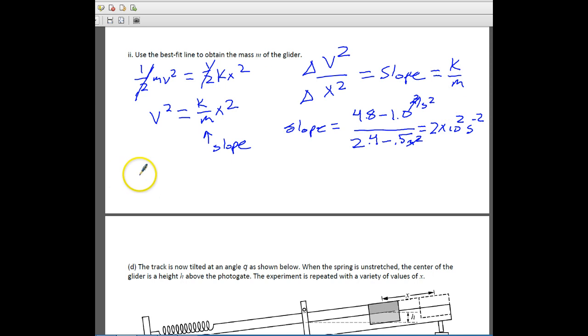So if we think about this, if slope is equal to k over m, and I rearrange this for m, m is going to be equal k over the slope. So let's just do that. Our k value is 40 newtons per meter, and our slope we just calculated is 2 times 10 to the negative second, second squared. A newton, remember, is really a kilogram meter per second squared.